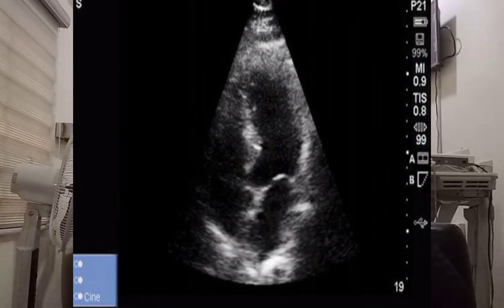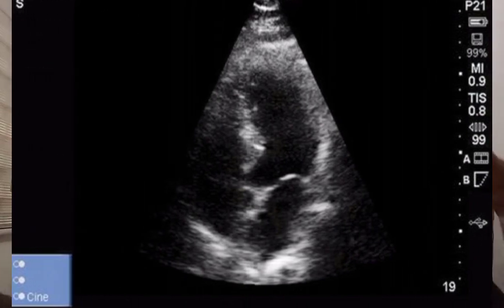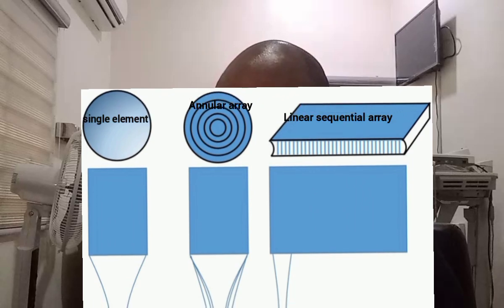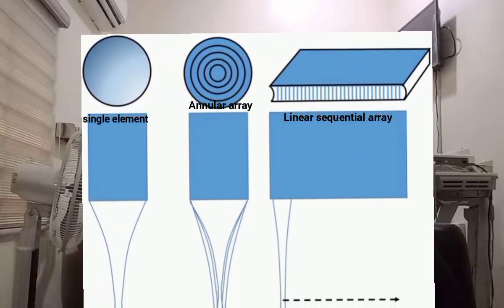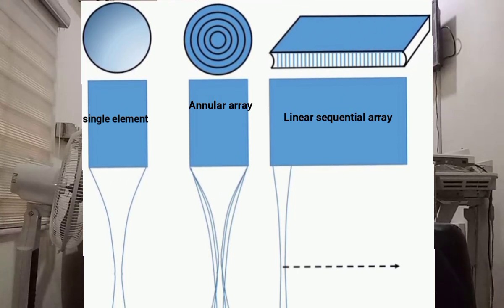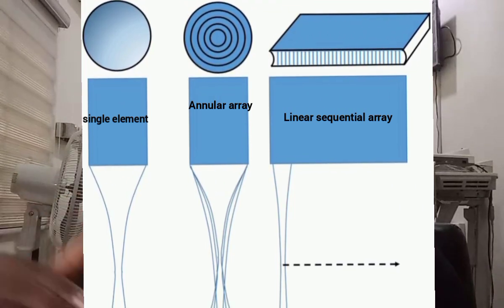It produces a sector field of view or a pie-shaped display in which the near field is narrower and the far field becomes progressively wider. The mechanical sector transducers were of two types: the single element transducers, which are always with fixed focus, and the annular array transducers, which have a variable focus.